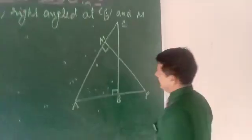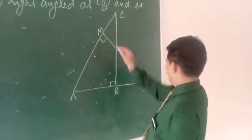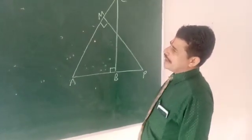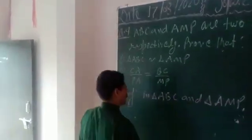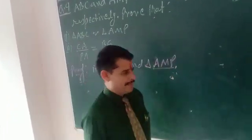We have two right triangles connected here. One right triangle is ABC and the other right triangle is AMP. In these two right triangles, we have a similarity. The right angle is formed in triangle ABC and in triangle AMP.